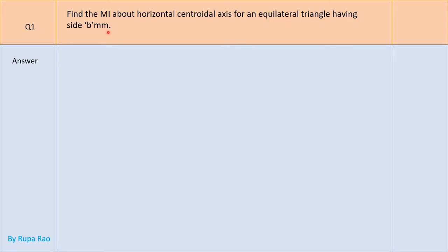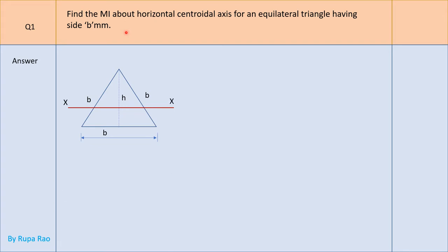This is an equilateral triangle. The height of the triangle is shown in dotted lines and the side is B — all three sides are B as given in the problem. The horizontal centroidal axis XX will be at a distance of H/3 from the baseline, assuming the height as H.